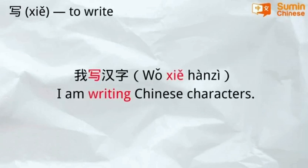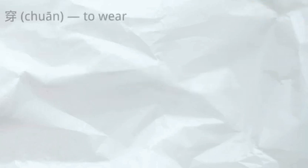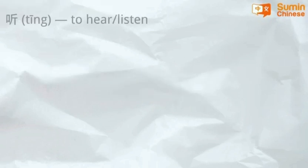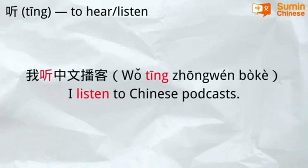Use the verb 写 (to write): 我写汉字 — I write Chinese characters. Use the verb 穿 (to wear): 我穿了连衣裙 — I am wearing a dress.